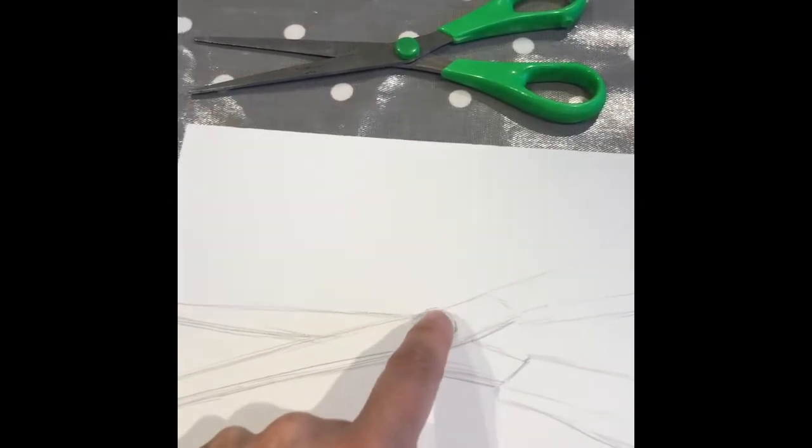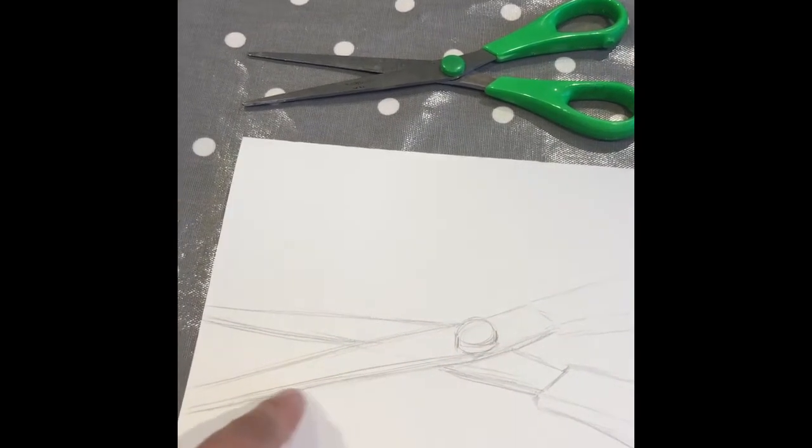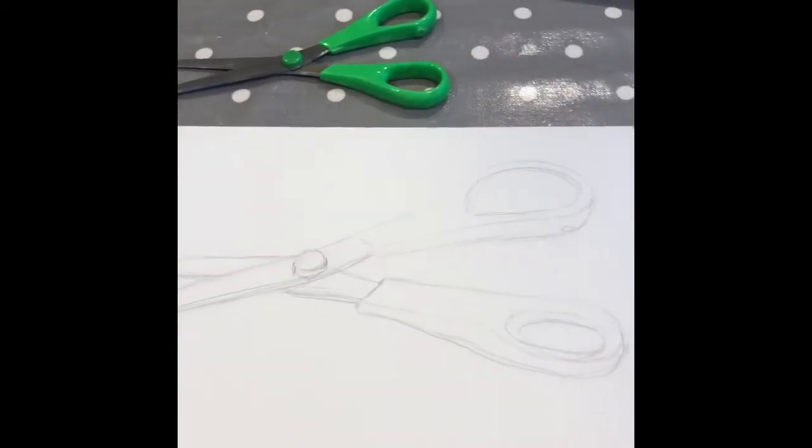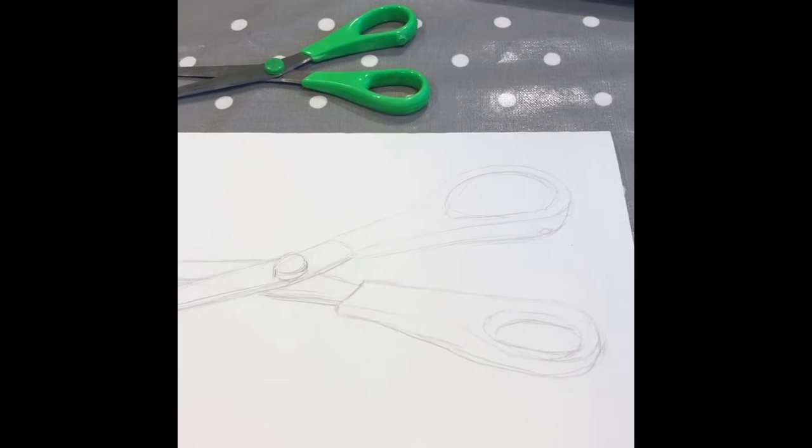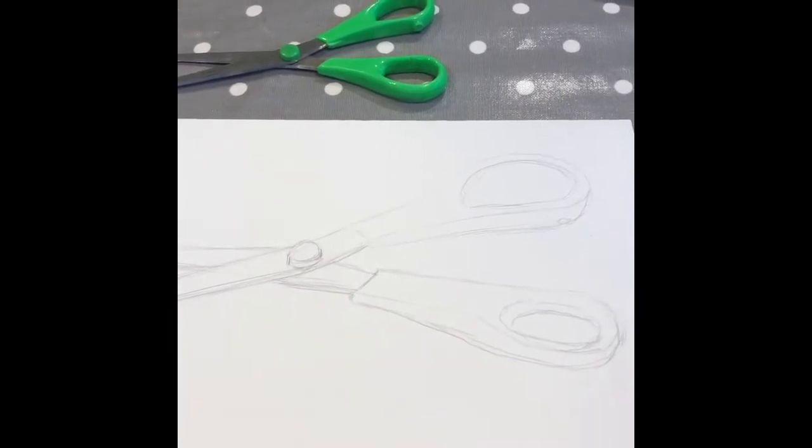The blade goes straight this way, but the blade here goes down, it curves around and then it straightens up. So make sure that whatever you are choosing to draw and choosing to enlarge, that you make sure you follow how it's been made, basically, and really observe the curves.